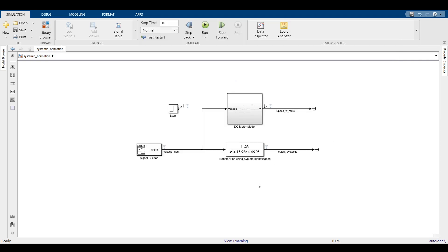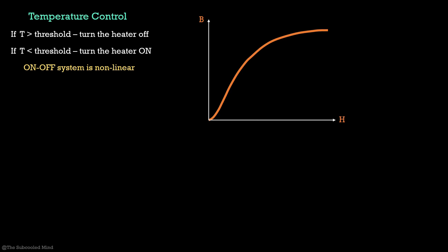But we have a catch. What we have assumed here is that the system is linear. But not all systems are linear. Let us understand this statement using a few examples. In the most basic temperature control system, when the temperature exceeds the threshold, you turn the heater off. And when the temperature falls below the threshold, you turn the heater on. This on-off system is non-linear in nature. Let us see the magnetization curve of a core. We see that it is linear in some region and then it starts saturating. Luckily we operate in the linear region in most cases and so we do not have to worry about the saturation.